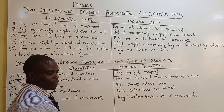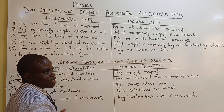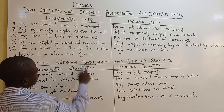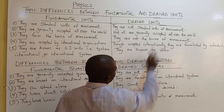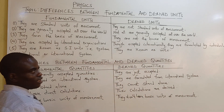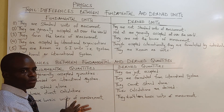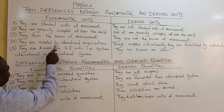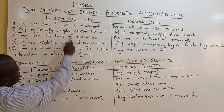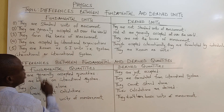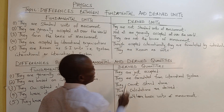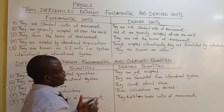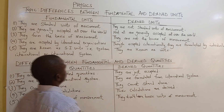Fundamental units are like the foundation of a house — they must stand before you can build on them. Derived units, on the other hand, are not the basis of measurements; they are formed by simple combinations of the fundamental units. Fundamental units are accepted by international organizations, while derived units are accepted internationally but are formulated by individuals.